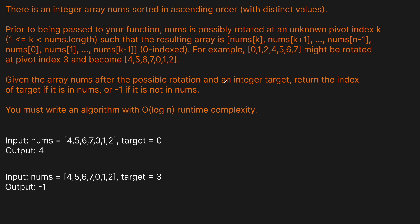Given the array nums after the possible rotation and an integer target, return the index of the target if it's in nums, or -1 if it's not. You must write an algorithm with O(log n) runtime complexity. For example, if the target is 0 it's at index 4; if the target is 3 and it doesn't exist, we return -1.